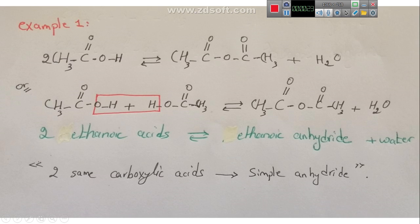The first carboxylic acid is ethanoic acid, and the second one is ethanoic acid. As we have said, the OH group here with the H group gives H2O, and the molecule here is combined to this molecule here to give this anhydride.